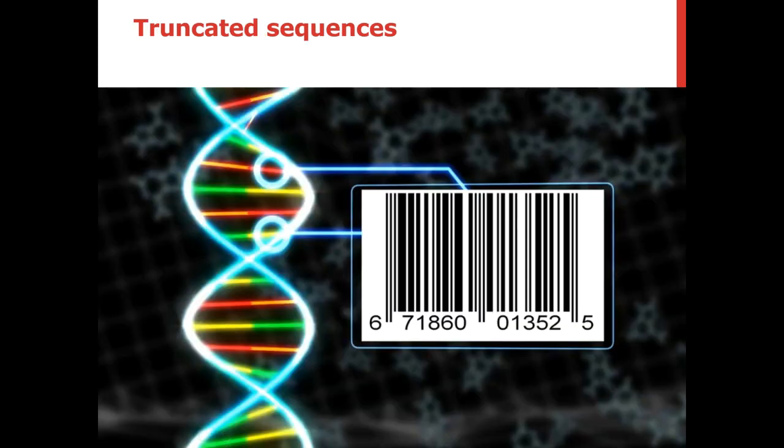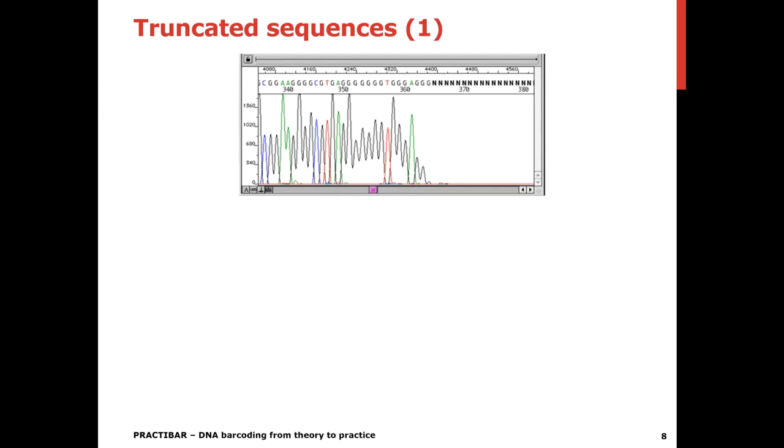Then sometimes you can have truncated sequences like you see here. So you have nice peaks and then suddenly it stops while you're expecting more sequences because your amplicon was larger.